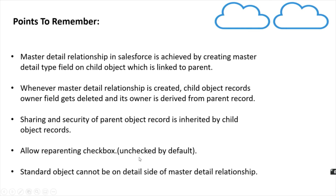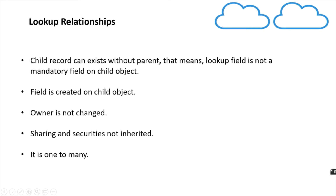There is a checkbox called 'Allow Reparenting' while creating the master detail relationship field. This means: can we reparent our child object record to some other parent object record? For example, if a child is linked to one school, can we link this child to a different school? By default this value is unchecked, meaning reparenting is not allowed, but you can enable it by checking that value. Also, a standard object cannot be on the detail side of a master detail relationship — standard objects have to be the parent object.